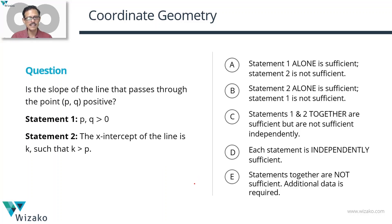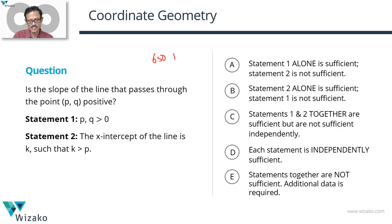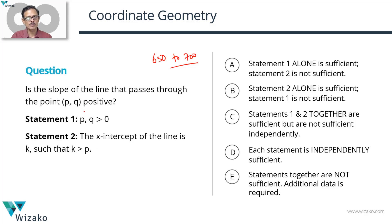This is a GMAT data sufficiency practice question. It's a medium difficulty question from Coordinate Geometry — I'll classify this as a 650 to 700 level question. The question asks: is the slope of the line that passes through the point P, Q positive? The only information from the question stem is that this line passes through the point P, Q.